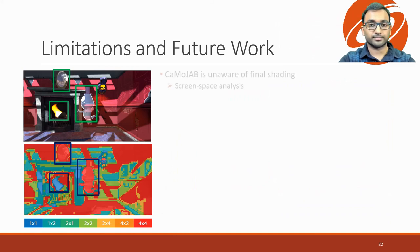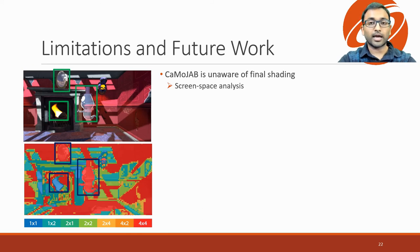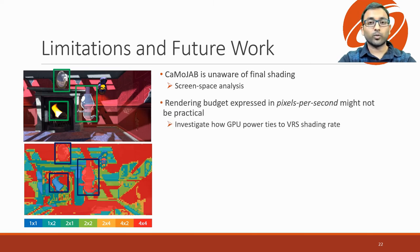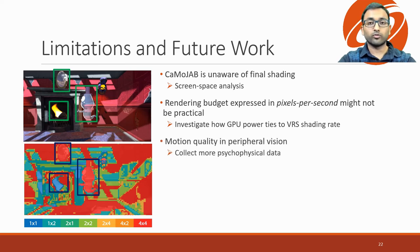Our work is not without its limitations. One of the major drawbacks is that we use diffused textures as a proxy for image frequency content, but for some complex materials this might not hold true — for example, in case of reflections, transparency, and particle systems, our method ends up allocating non-optimal shading rates due to incorrect shading information. This can in theory be handled by shifting analysis from texture space to screen space, though it might be non-trivial to achieve good performance. Another drawback is that we operate in a fairly abstract unit of pixels per second for budget, instead of GPU cycles. An investigation into how GPU power ties to VRS shading rate could prove useful. Finally, our work only focused on foveal vision; however, our sensitivity to motion artifacts is drastically reduced in peripheral vision, which can be exploited to achieve further gains in foveated rendering.